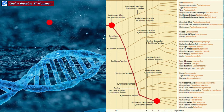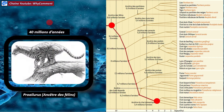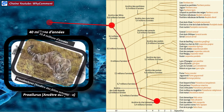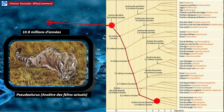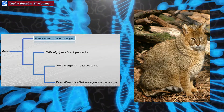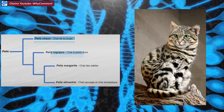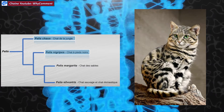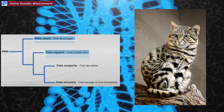L'ancêtre de tous les félins est apparu il y a 10,8 millions d'années, et l'ancêtre de tous les chats domestiques et sauvages est apparu il y a 3,4 millions d'années. À partir de cette date, l'évolution des chats actuels s'est principalement produite dans la région du bassin méditerranéen. Parmi les 4 espèces de chats sauvages, on s'intéressera seulement à la dernière, Felis silvestris, qui a donné le chat domestique.